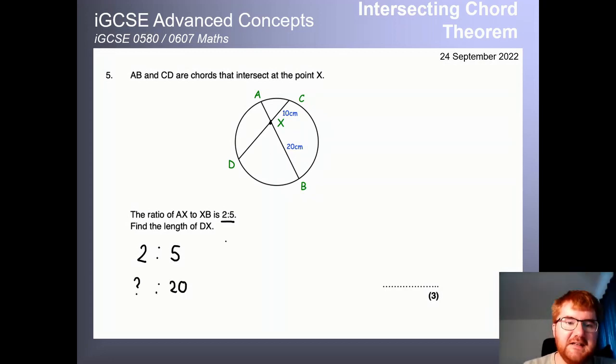And once you set it up like this, it's really straightforward to work out the missing value. So what do I do to five to get to 20? I multiply by four. What do I multiply two by? Well, I'm going to do the same on both sides. And so this mystery number here is going to be eight centimetres. So let's pop that in.